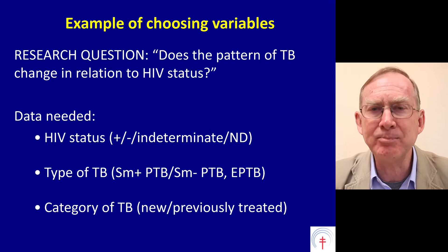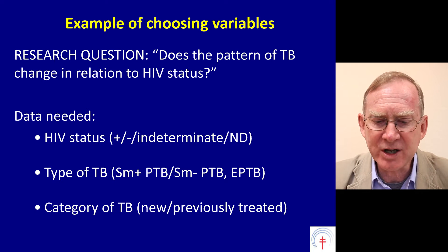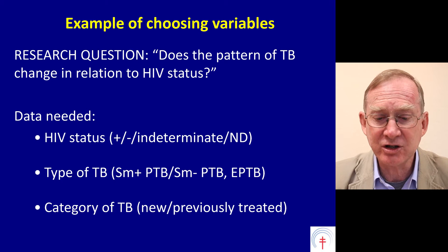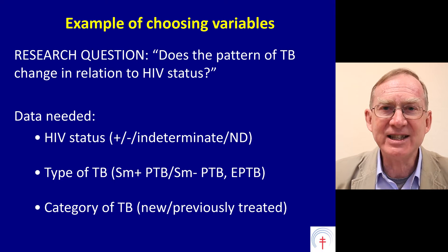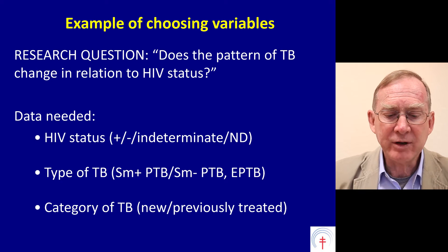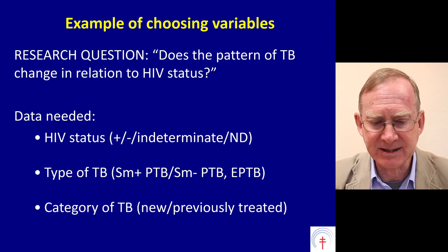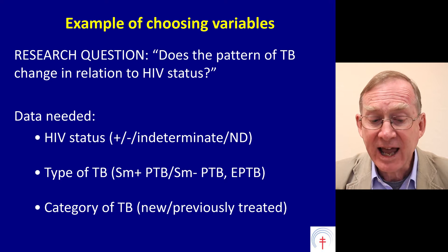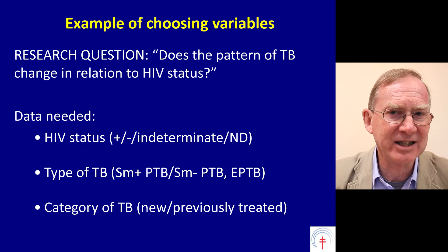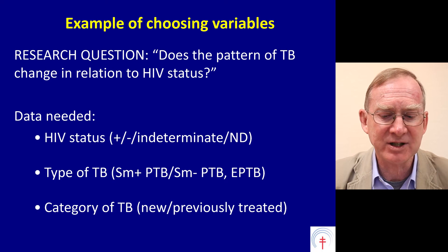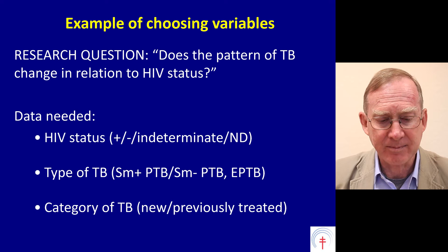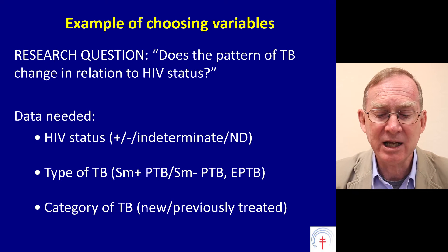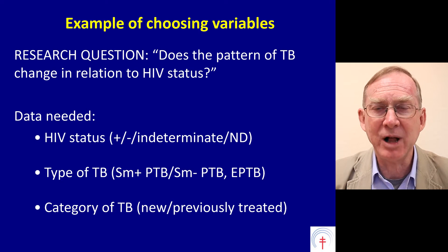Let me give you an example — a simple study done in Malawi. The research question was: does the pattern of tuberculosis change in relation to HIV status? The data needed was as follows. We needed HIV status, with parameters: HIV positive, HIV negative, HIV indeterminate (where the test hasn't produced either a positive or negative result), and HIV not done. Type of TB — there are three types: smear positive pulmonary TB, smear negative pulmonary TB, and extra-pulmonary TB.